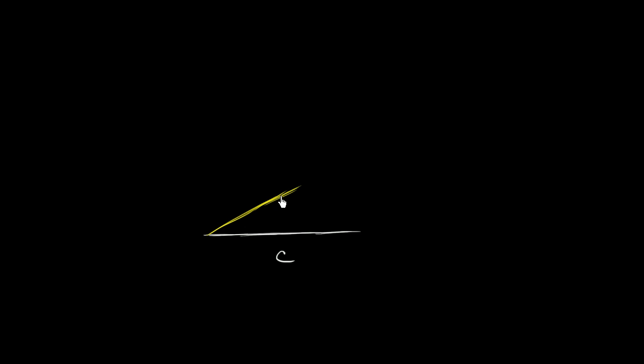I'm going to construct it so this hypotenuse sits on the bottom. So that's the hypotenuse of my right triangle. Let's say that this is the longer side that's not the hypotenuse — we could have two sides that are equal, but I'll draw it so it looks a little longer. Let's call that side length A. And then let's draw this side right over here — it has to be a right triangle — that side of length B. And this is our 90 degree angle.